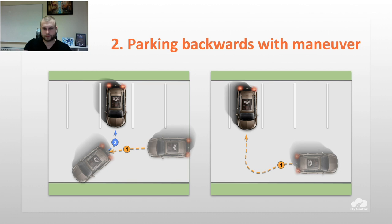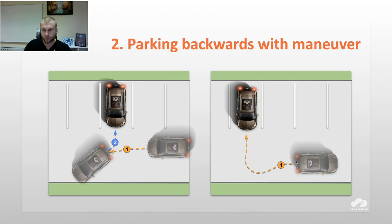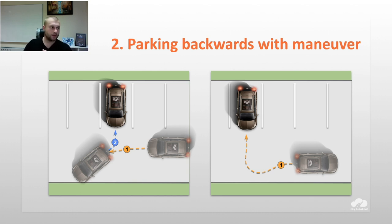If asked to park backwards with maneuver, don't be confused — it means you just need to use an angle like 45 degrees or 90 degrees. Always use indicators during all exercises, whether parking backwards or straight. The logic is simple: if you park your car to the left, your wheels turn left, so your indicator also goes left.